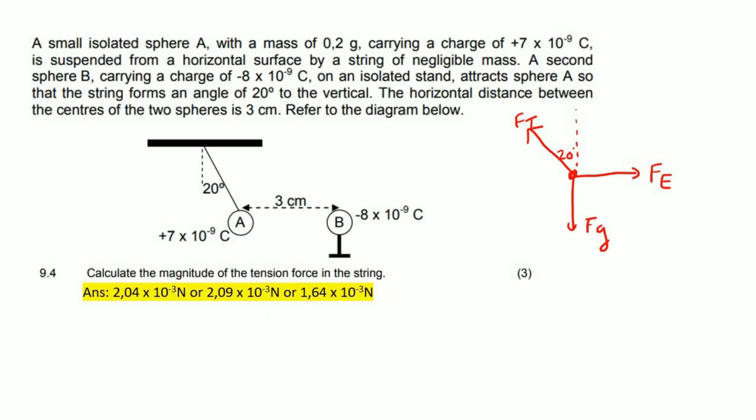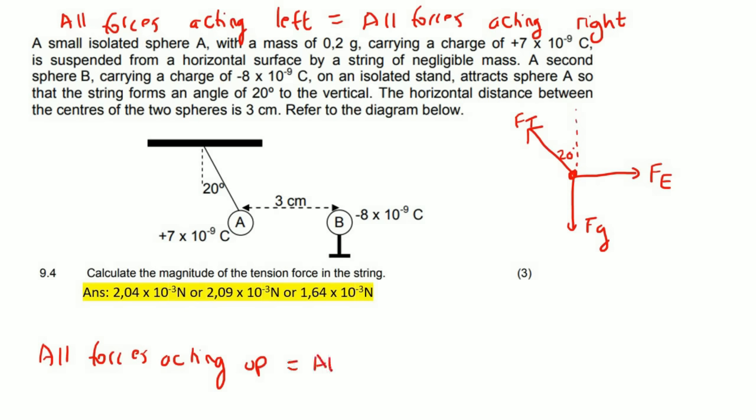And the last question. Calculate the magnitude of the tension force in the string. Now, this is actually very easy. I'll show you guys the way it works. We know that this object A cannot move, right? We know that it's not moving. So it is in equilibrium. When something is in equilibrium, it means that all of the forces acting to the left must be the same as all of the forces to the right. It also means that all forces acting up must equal all forces acting down. That is just basic equilibrium.